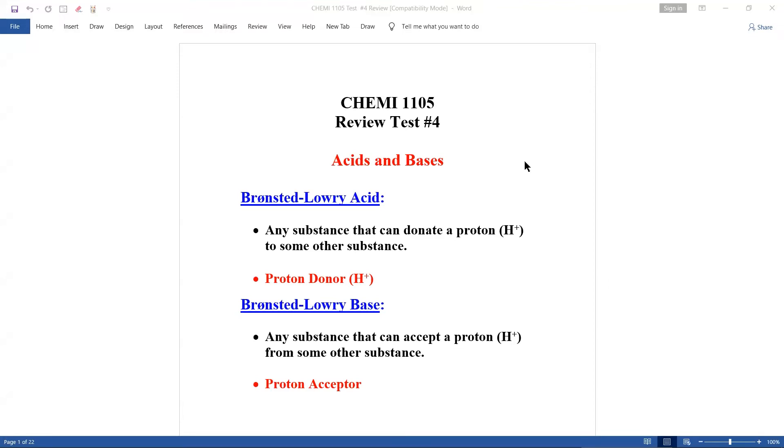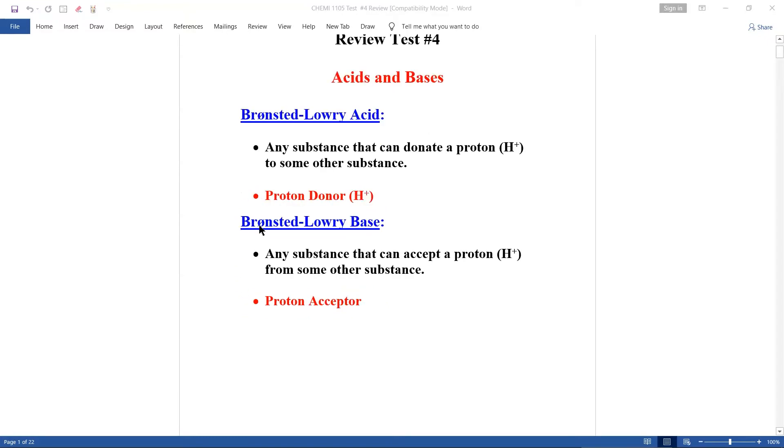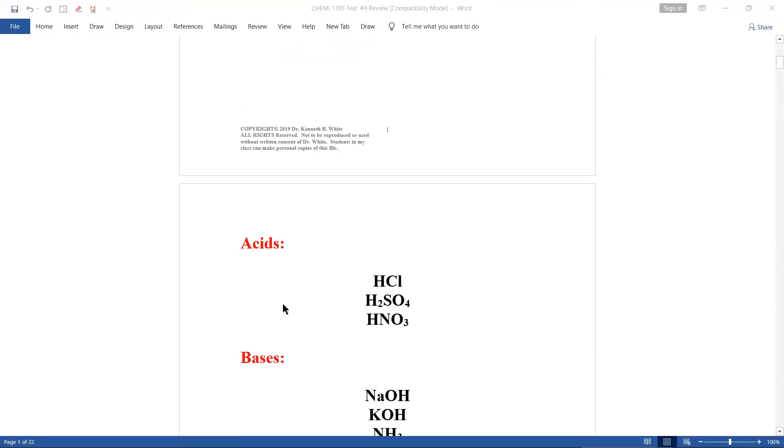All right, let's go through and do this. For test number four, you should know that a Bronsted-Lowry acid is any substance that can donate a proton, or just write down proton donor. You should know Bronsted-Lowry base, any substance that can accept the proton. It's a proton acceptor. You should know HCl, hydrochloric acid is an acid. H2SO4, sulfuric acid is an acid. HNO3, nitric acid is an acid.